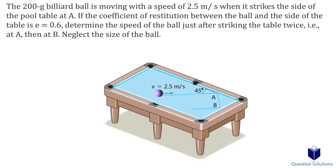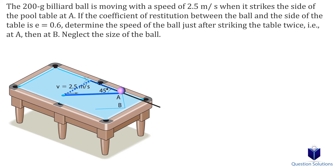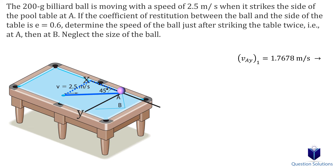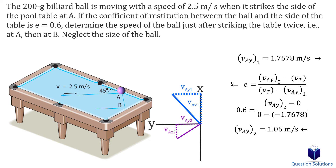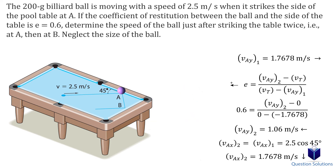Let's take a look at this example where we need to find the velocity of the ball after it strikes the edge of the table twice. We will first look at point A. The ball comes and hits the edge at an angle of 45 degrees from the x-axis. We can figure out the y-component of velocity before it strikes the edge at A — that's 2.5 sin(45°). Notice that once the ball hits point A and leaves, the x-component of velocity is parallel to the x-axis, so we only need to consider the y-component when using the coefficient of restitution equation. We will pick left to be positive. The table doesn't move, so its velocity is 0. Now we can solve for the y-component of velocity after the ball hits the table at point A.